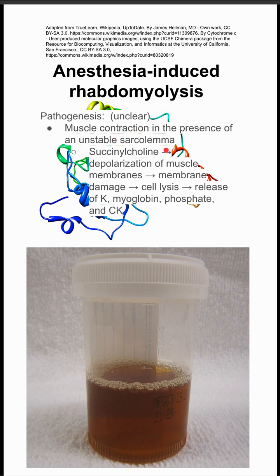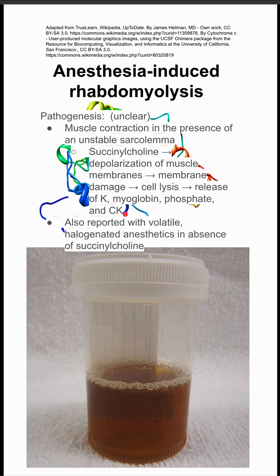Succinylcholine, for instance, causes depolarization of muscle membranes, which can cause membrane damage, leading to cell lysis and release of potassium, myoglobin, phosphate, and creatinine kinase. This has also been reported with volatile halogenated anesthetics in the absence of succinylcholine.